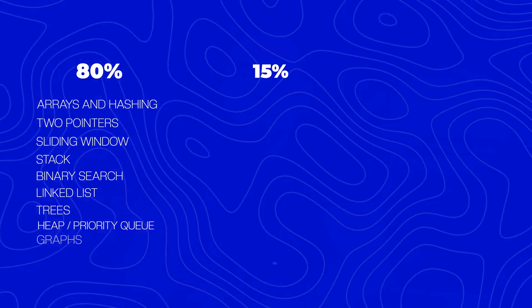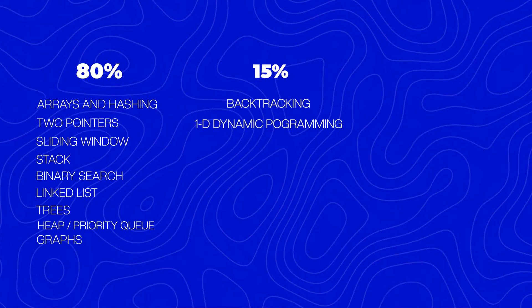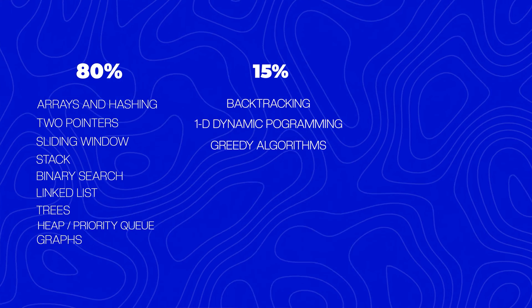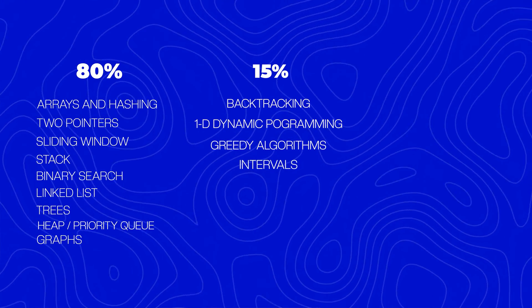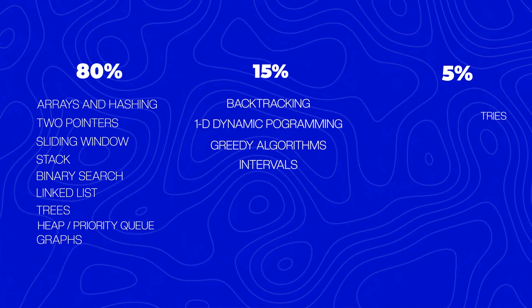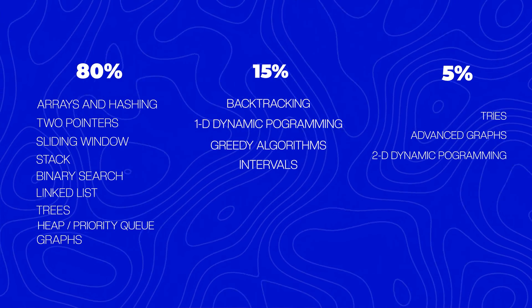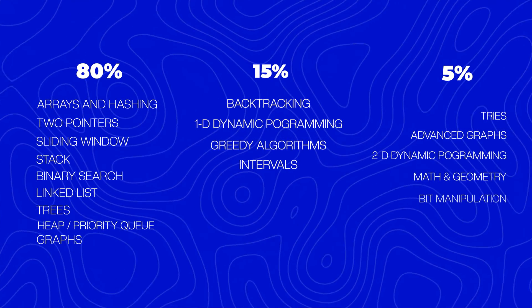Category two covers roughly 15% of interview problems and includes backtracking, 1D dynamic programming, greedy algorithms, and interval-based problems. Finally, if you're really driving it home and want to be prepared for every type of problem out there, there's a third category covering the last 5% — which includes tries, advanced graphs, 2D dynamic programming, math and geometry, and bit manipulation.